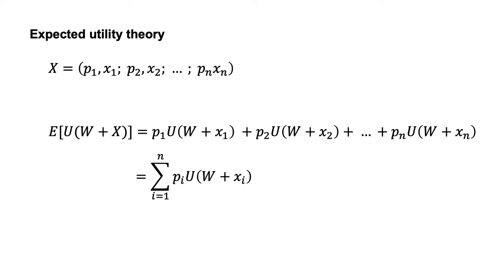EU of W plus X equals P1U of W plus X1 plus P2U of W plus X2 through to PNU of W plus Xn, which equals the sum from i equals 1 to i equals n of PIU of W plus Xi.